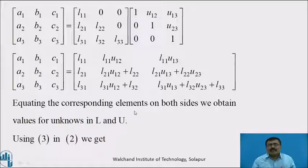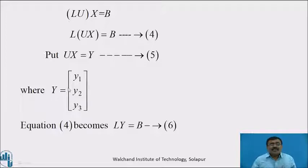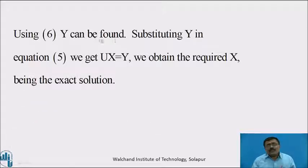Equating the corresponding elements on both sides, we obtain the values of L and U. Using equation 3 we get LU·X = B, which can be written as L·(UX) = B, call it equation 4. Now put UX = Y, call it equation 5, where Y is the column unknown matrix [Y1, Y2, Y3]. Equation 4 becomes L·Y = B, call it equation 6. Using equation 6, Y can be found, and substituting Y in equation 5, UX = Y, we obtain the required solution X.